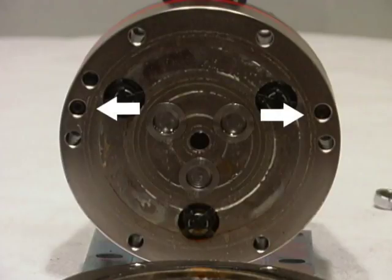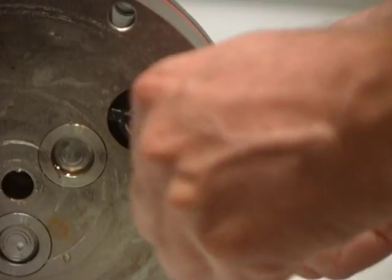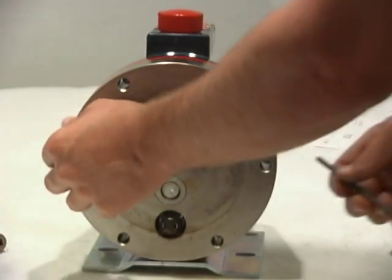At this point we are going to remove the valve plate. The two Allen screws at approximately nine and three o'clock are removed. The valve plate is now loose from the pump.